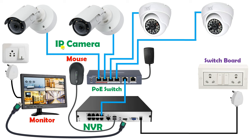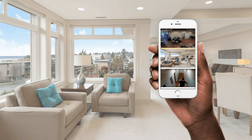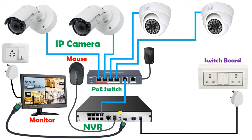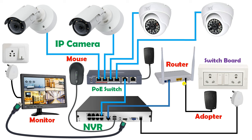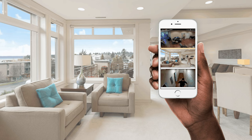Now if we want to watch all these recordings on our phone, we have to connect this NVR with the internet. For connecting the NVR with the internet we have to use a router. At the back side of the router there is a port — connect a cable from this port to the LAN port on the NVR. Provide power supply to the router using its adapter. After this much connection, whatever footage is recorded through the IP camera, we can watch it directly on the monitor as well as on our smartphone.